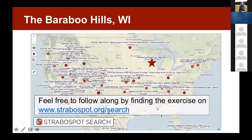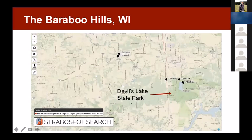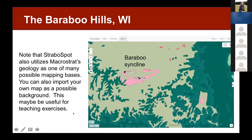So we did it in Baraboo. It's easy to find using the search interface. Here are the spots. If you do a zoom to extent of spots, you see something like this — and this is Devil's Lake. One of the big advantages of StraboSpot is you can use MacroStrat's geology within it. MacroStrat is mostly stratigraphic columns, but they have a very nice map interface where you get different images at different scales of resolution. This is a base map, so the students can know where they are by plugging in this base map.